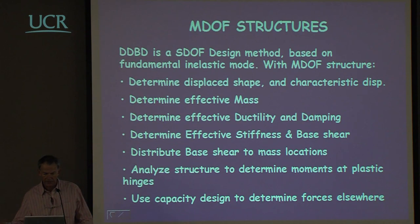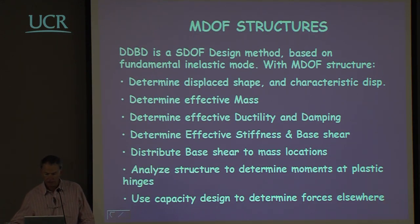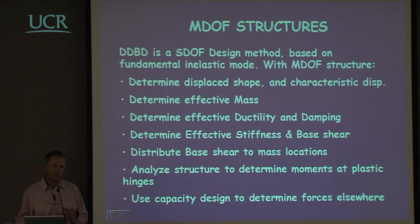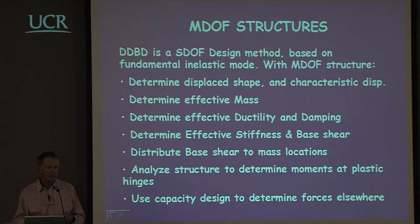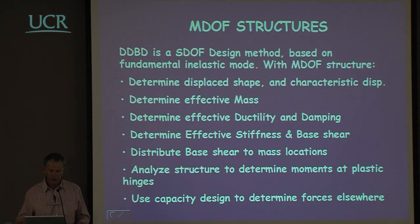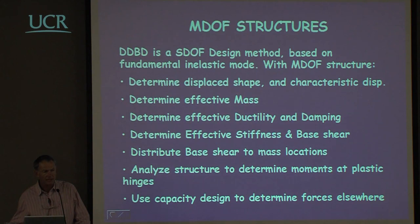The effective mass is not the total mass of the building or bridge. We determine the effect of ductility and damping, the effective stiffness and the base shear in the normal fashion for a single degree of freedom system. Having got that base shear we then have to go back to our relationship between our multi-degree of freedom system and the single degree of freedom system. The first thing is to distribute that base shear to the mass locations, and then analyse the structure to determine the moments at the plastic hinges.